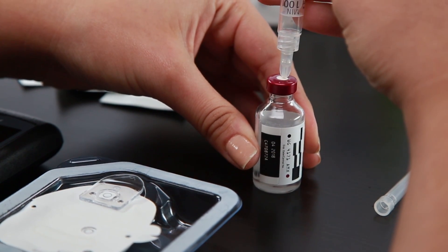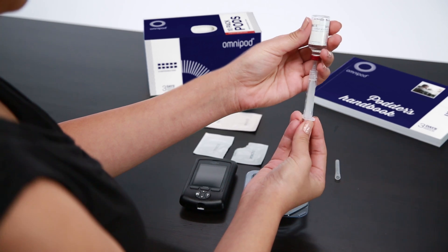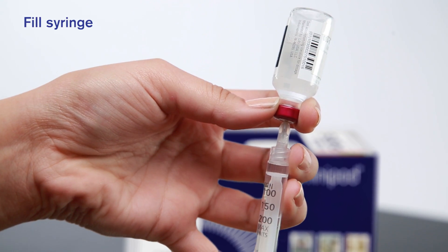With the needle still in the vial and your finger still depressed, turn the vial of insulin upside down. Fill the syringe with your needed amount of insulin.